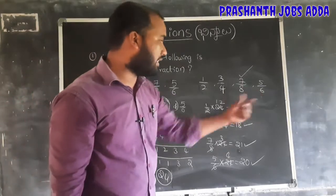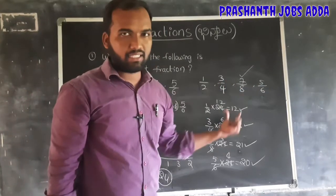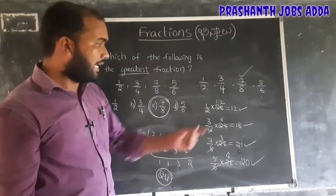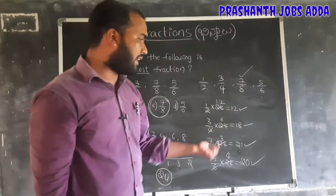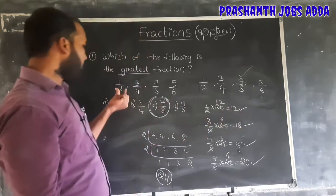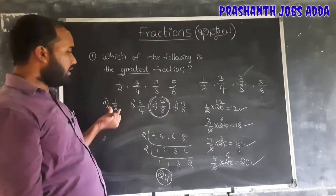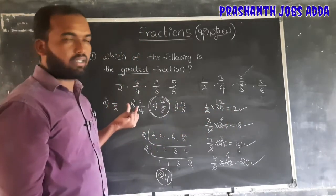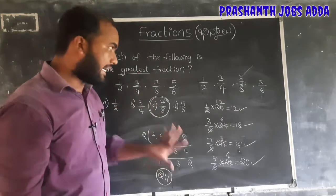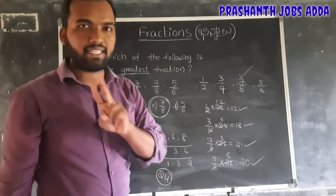In the LCM method, the smallest value is 12, which corresponds to 1 by 2 — the smallest fraction. This is the second method.